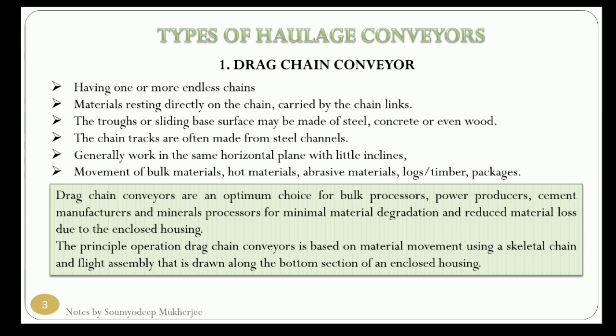Haulage conveyors are differentiated into different types. The first is the drag chain conveyor, which has one or more endless chains that slide in a track resting on the bottom of a trunk. The material rests on the drag chain conveyor and moves directly on the chain, carried by the chain links. The sliding base surface can be made of different materials like steel, concrete, or wood, and chain tracks are often made from steel channels.